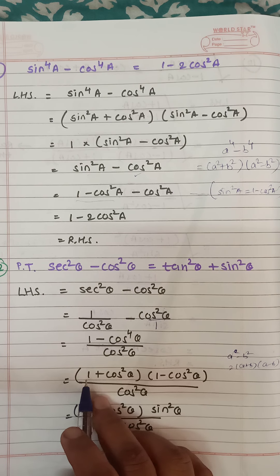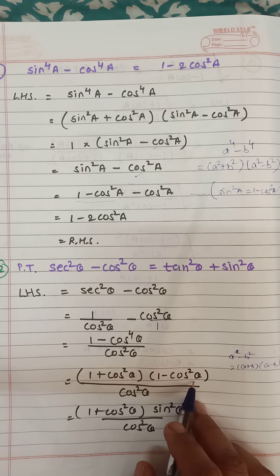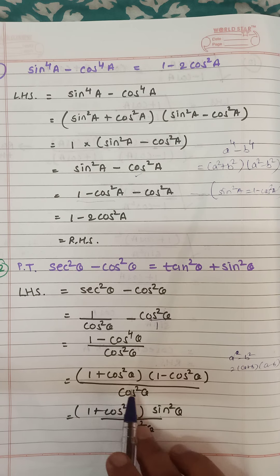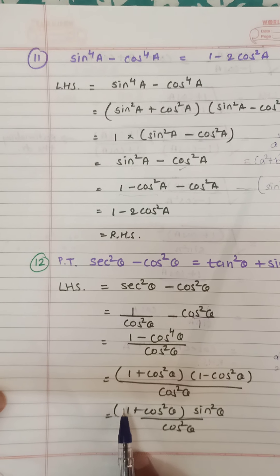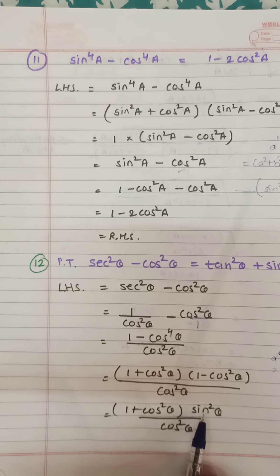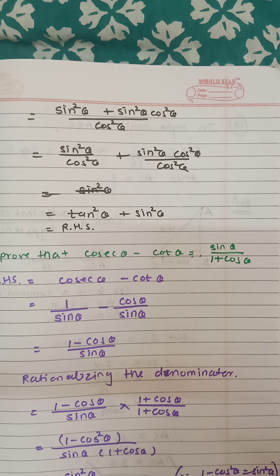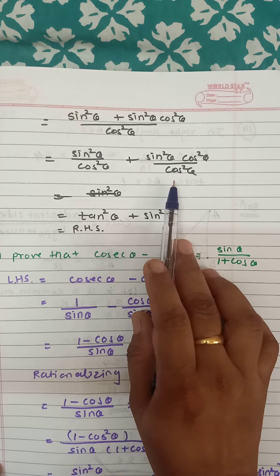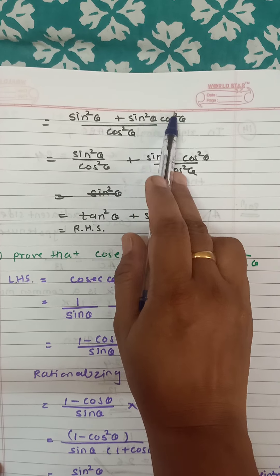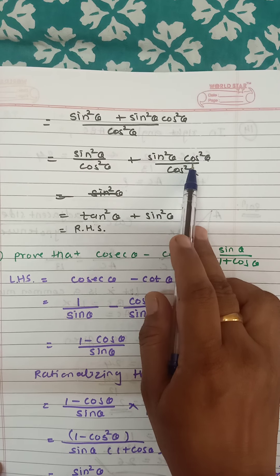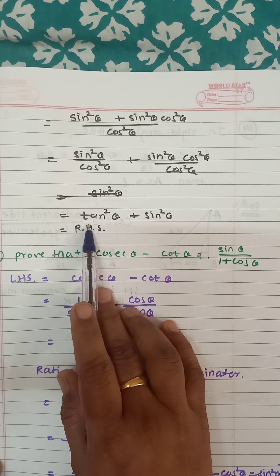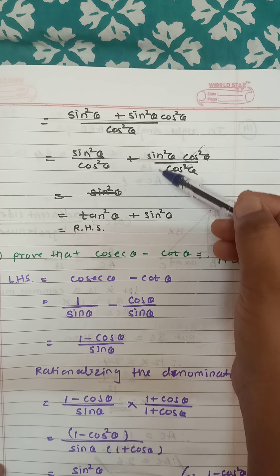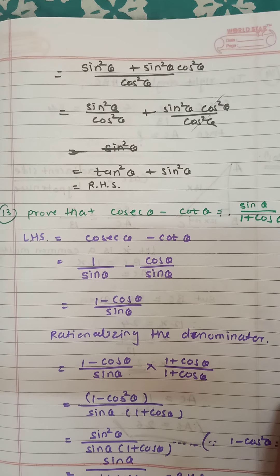So this becomes (1 plus cos²a)(1 minus cos²a). We have the formula 1 minus cos²a = sin²a. Copy the rest as it is. Now we have (1 plus cos²a) times sin²a. Multiplying out: sin²a plus sin²a·cos²a. Separate the denominator by cos²a: sin²a upon cos²a plus cos²a upon cos²a. The cos²a cancels, leaving tan²a plus sin²a, which equals the right hand side.